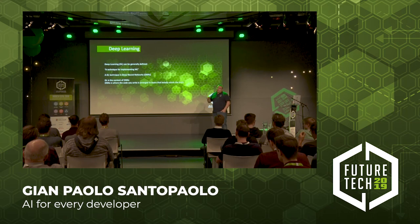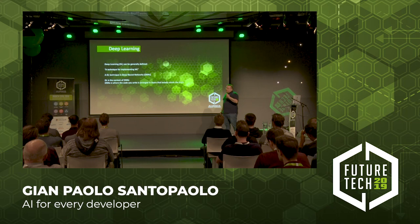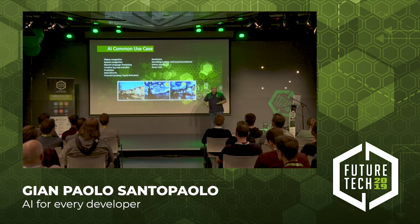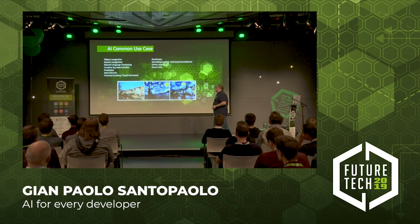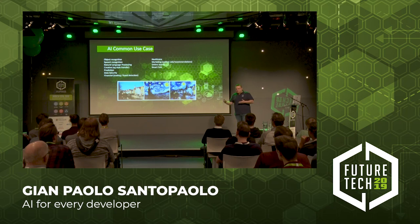Deep learning is a technique to implement machine learning. Deep learning is the context, and deep neural network is the real implementation where we are going to write our code. Artificial intelligence is good at anything that with standard programming is difficult or not possible to achieve — object recognition, speech recognition, natural language processing, and many other fields.